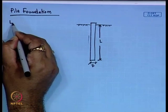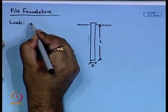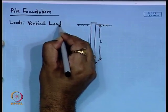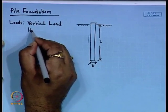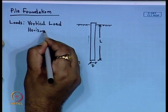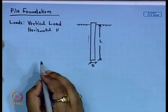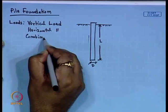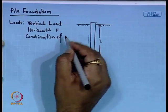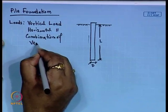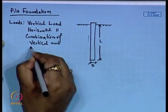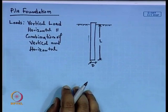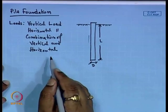First we will talk about the loads acting on a pile foundation. The first type is vertical load, the second type is horizontal load, and the third is the combination of vertical and horizontal loads. These are the different types of loads acting on a pile foundation.